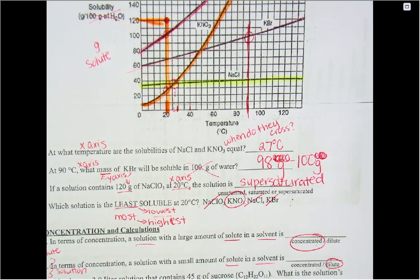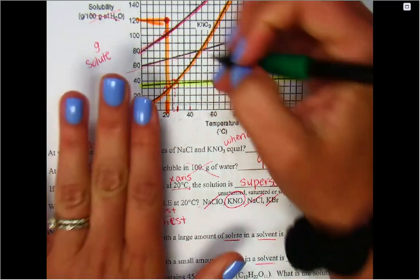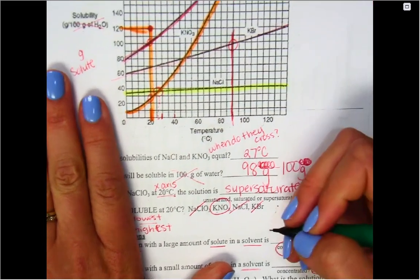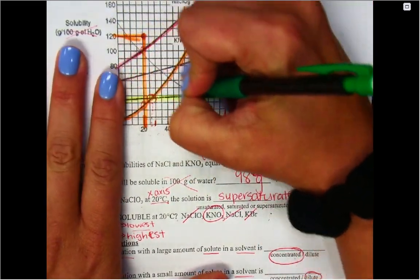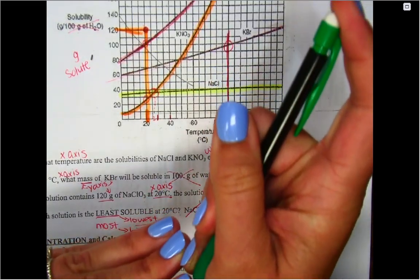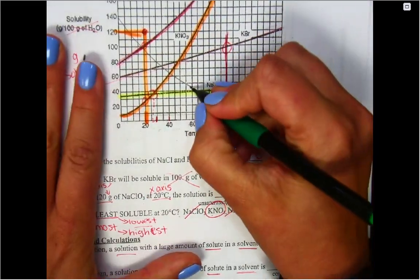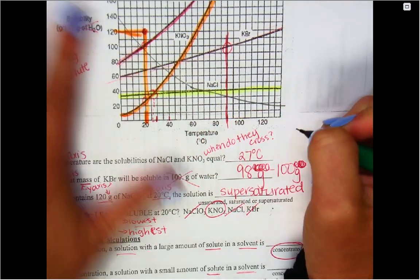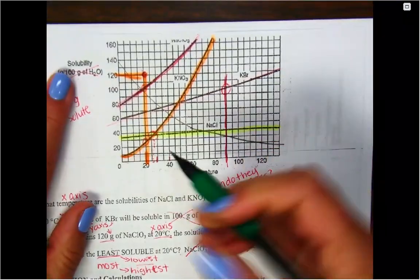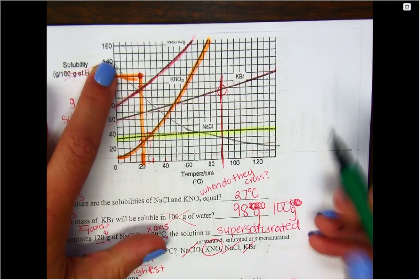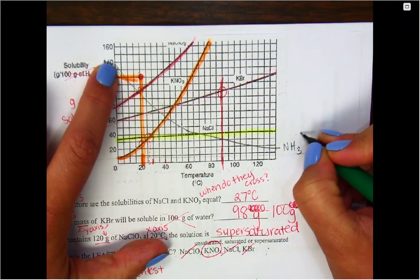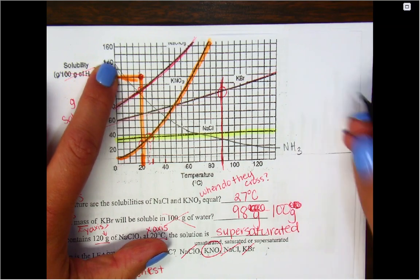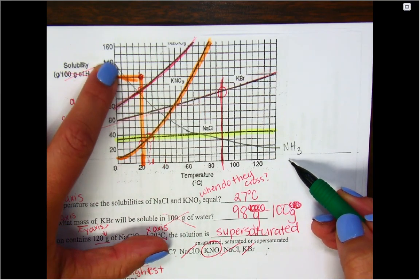So before we turn the page over, I'd like you to add one additional topic to it. Start at like 140 and just kind of make a curve that is going down your page. So I kind of started it up here and I curved down. All right, so if I were to label this NH3, what state of matter is this according to this graph? It's the only one that's decreasing.